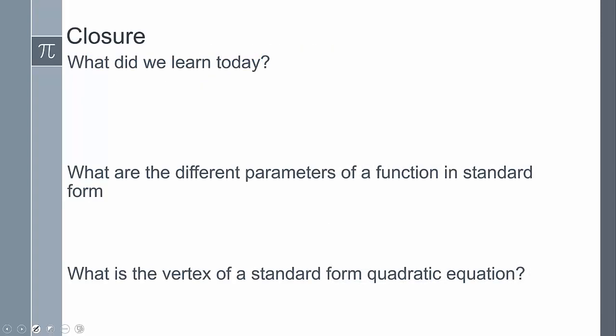So what did we learn today? We learned about the standard form or the graphing form of a parabola and the different parameters that can exist in our parent functions. What are the different parameters? We have h, which is the horizontal shift. We have k, which is the vertical shift. And our a is the vertical stretching and shrinking—think of that as pushing or pulling on the function. And what is the vertex of the standard form quadratic equation? (h, k).